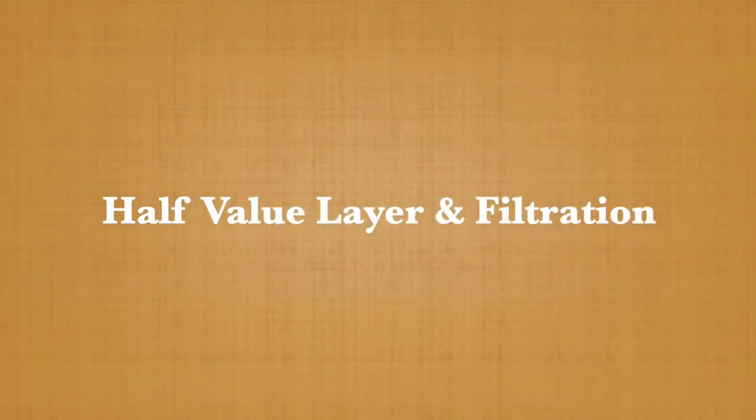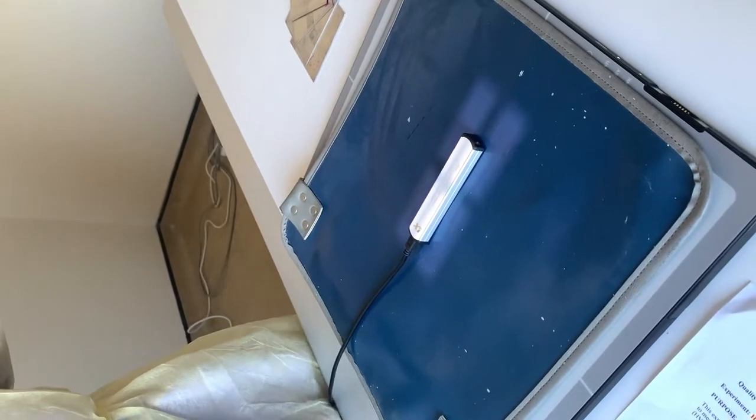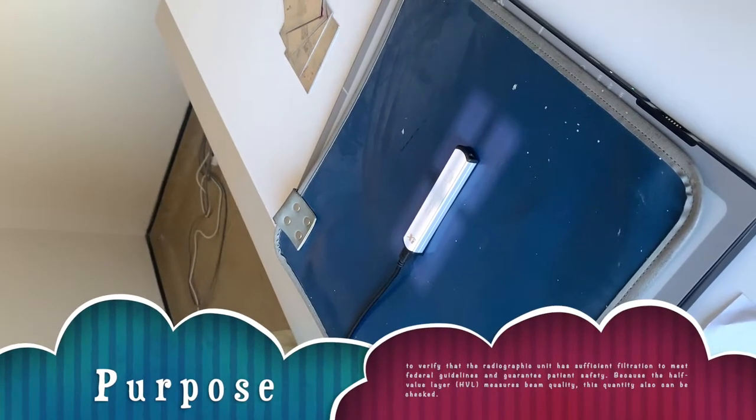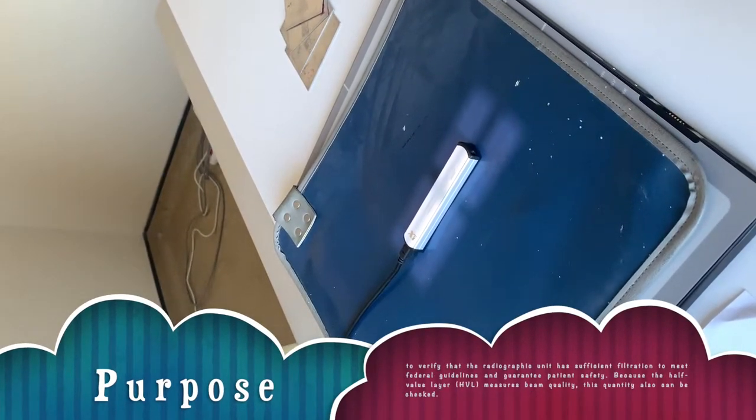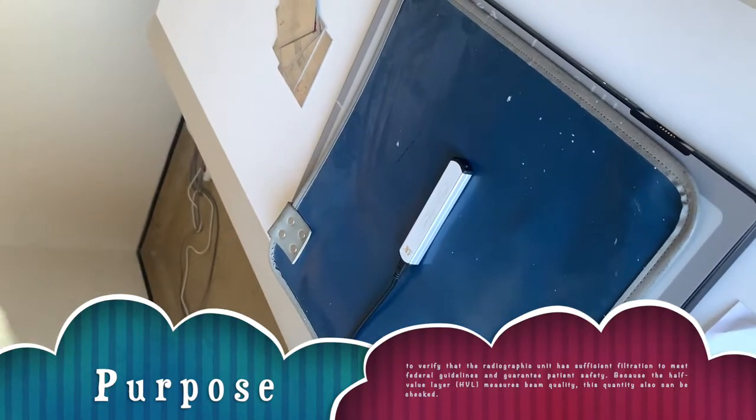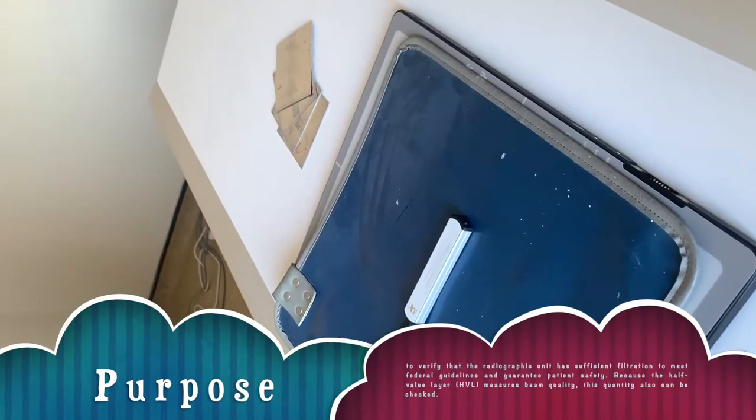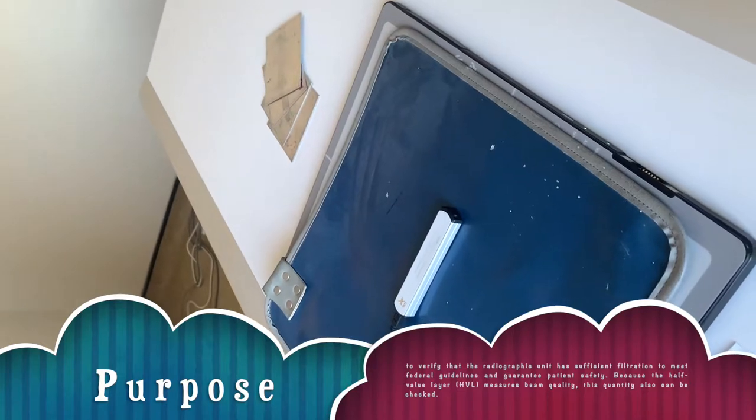So now we are doing the half-value layer measurement quality assurance. This experiment is done to verify the radiographic unit has sufficient filtration using aluminum sheet to verify the half-value measurement beam quality.